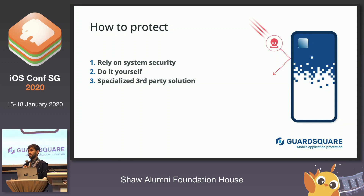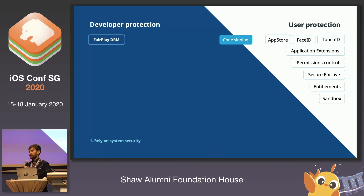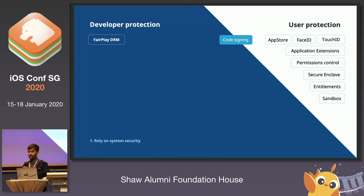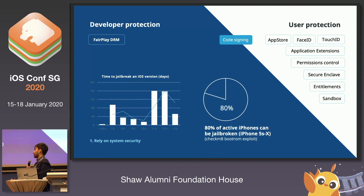For the first option, if you choose to rely on the system, you have to be aware of its limitations. Most iOS security mechanisms are designed with the user in mind, to protect the user. For applications, the main line of defense is FairPlay DRM, which is responsible for encryption of the application code. However, as long as it's possible to run your application on a jailbroken device, it will be possible to dump, export, and decrypt the application code. Nowadays that's not a problem at all, because around 80% of active iPhones can be jailbroken regardless of their iOS version. And despite common misconceptions, the jailbreak community is very active — they even managed to release a jailbreak for iOS 13 much faster than they did for previous versions. So if somebody wants to look under the hood of your app, the system just won't be enough to stop them.